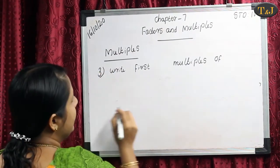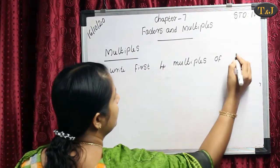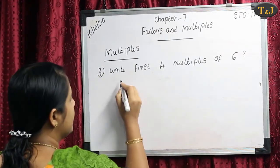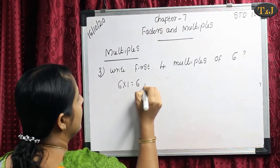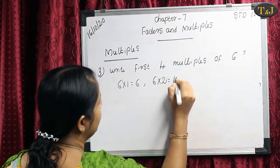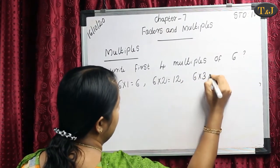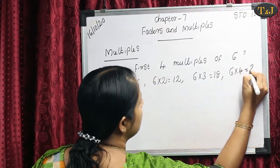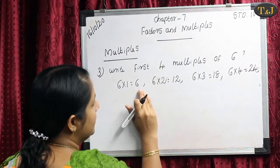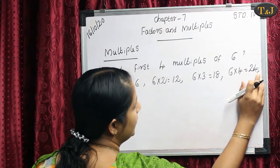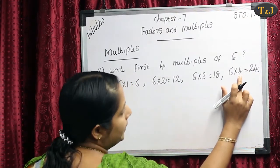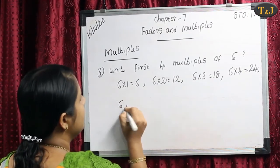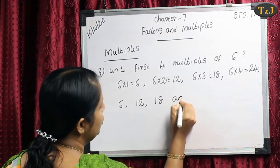One more example: Write the first 4 multiples of the number 6. So here we want the 4 multiples of 6. That means: 6×1 are 6, 6×2 are 12, 6×3 are 18, 6×4 are 24. Therefore the first 4 multiples of the number 6 are 6, 12, 18, and 24.